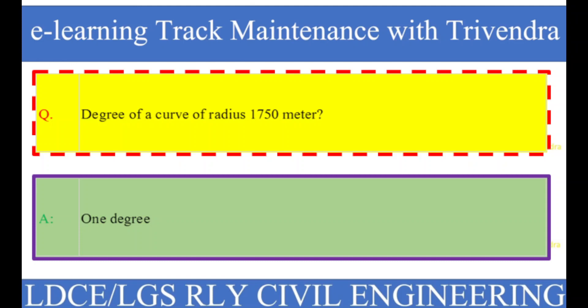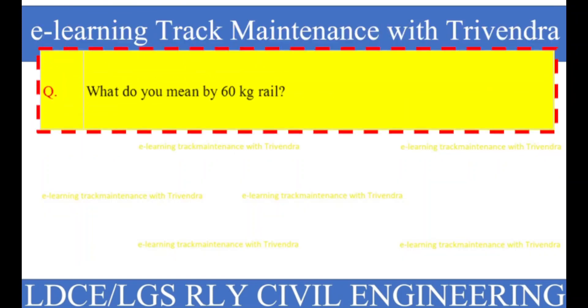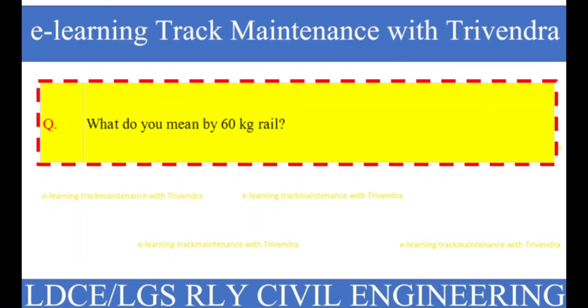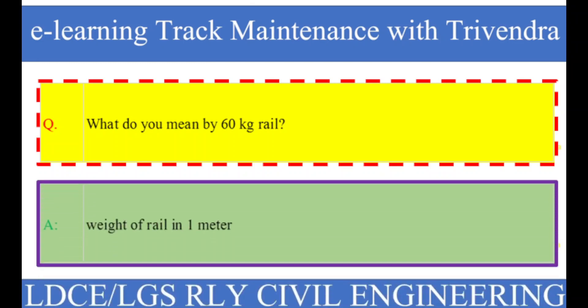Question number 69: What do you mean by 60 kilograms rail? The right answer is the weight of rail in one meter.